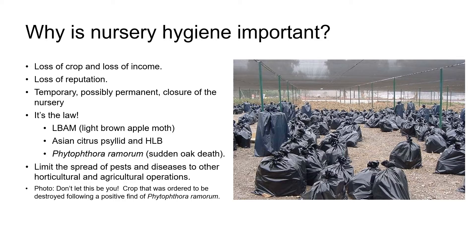Inspectors also have the power to order that a crop be destroyed if necessary in order to contain the spread of a disease or pest. If a nursery is not able to clean up its production practices and has repeat positive finds of a particular pest or pathogen, it may result in the permanent closure of the nursery. Even if the nursery is able to prove it's free of the pathogen or pest, its reputation may have suffered to the extent where it has to close because it's lost too much business and is no longer financially viable.